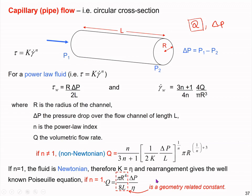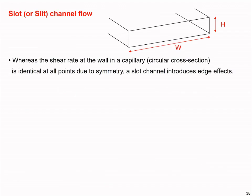Let's see how we can determine the same volumetric flow rate equation for a different type of channel geometry. Consider fluid flow inside a slot or slit channel. This is the cross section of the channel — you can see it's a rectangular cross section with width w and height h. Before it was a capillary channel with radius r; now we're going to look at how we work out the volumetric flow rate for a slit channel.